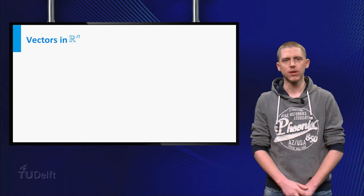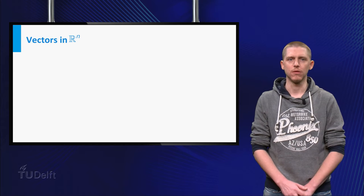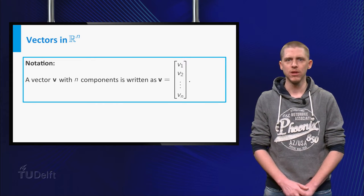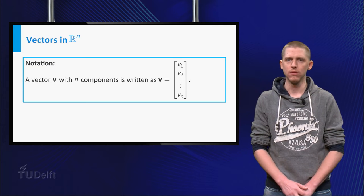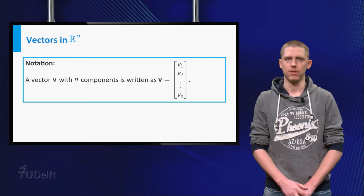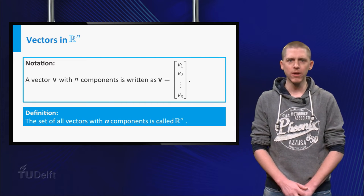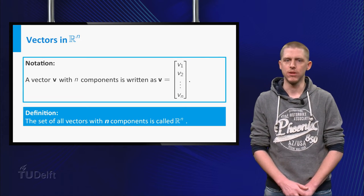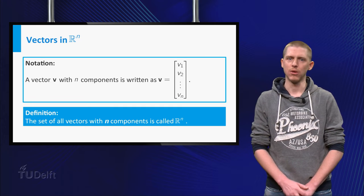In linear algebra a vector can have any finite number of components. If a vector v has n components, you can write this as a column with the numbers v1, v2 and so on until you reach the last number, vn. If you take all vectors with n components, we get a set called Rn. So if you say vector v is in Rn, you know that v has n components.